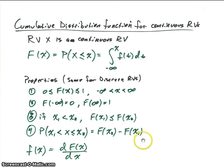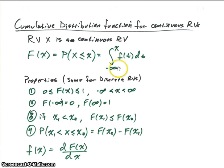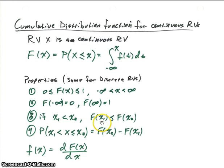What are the properties? Again, these properties are identical to what we've had before for discrete random variables. The function itself, because it is probability, can only be between 0 and 1 inclusive. The range for x is minus infinity to infinity. The function evaluated at minus infinity is 0 — integrating from minus infinity to minus infinity gives 0. Integrating from minus infinity to infinity, as we've seen with the density function properties, should equal 1. The function is a continuously increasing function, so if x1 is less than x2, then F(x1) will be less than or equal to F(x2).